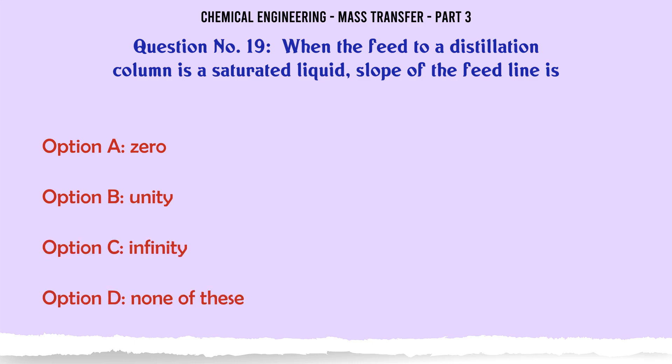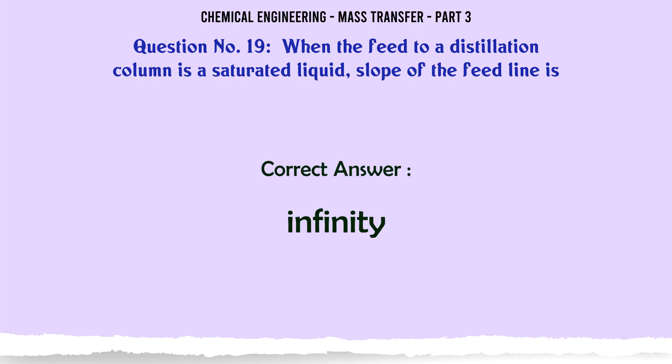When the feed to a distillation column is a saturated liquid, the slope of the feed line is: A) zero, B) unity, C) infinity, D) none of these. The correct answer is: infinity.